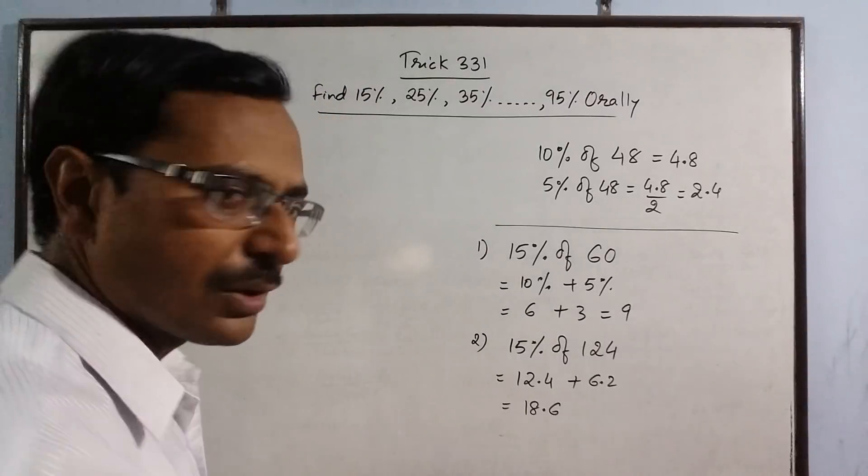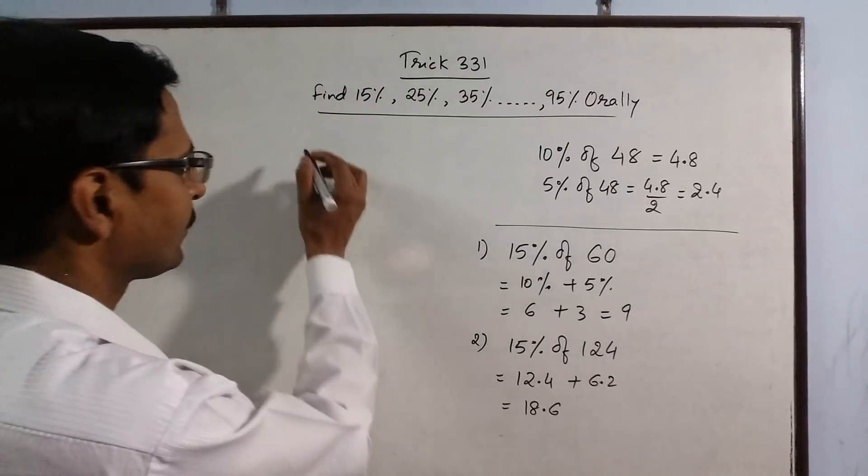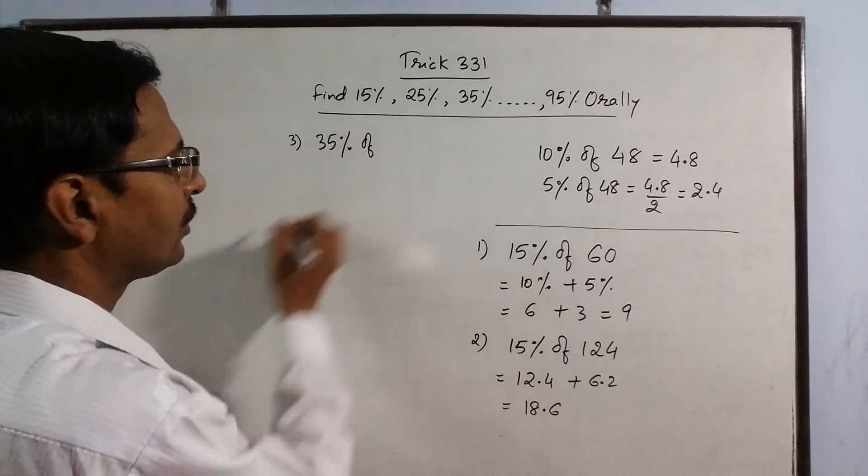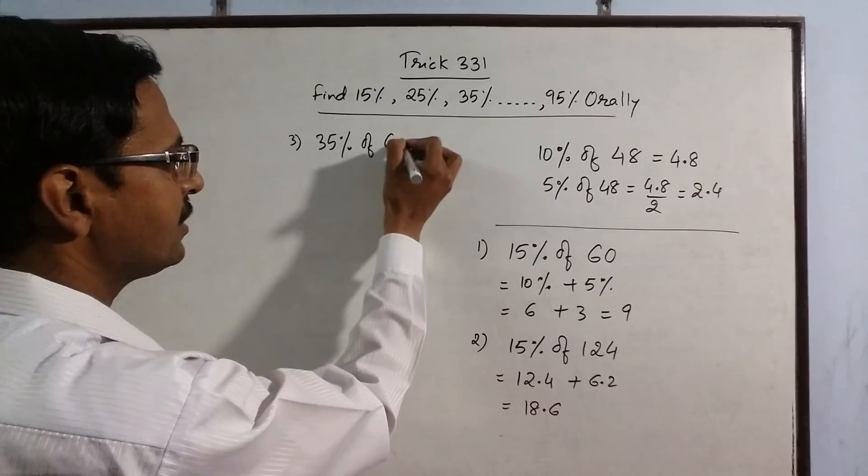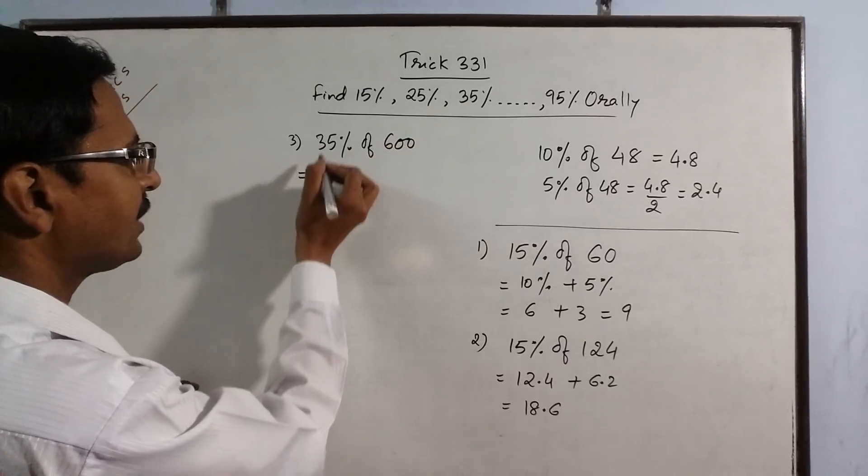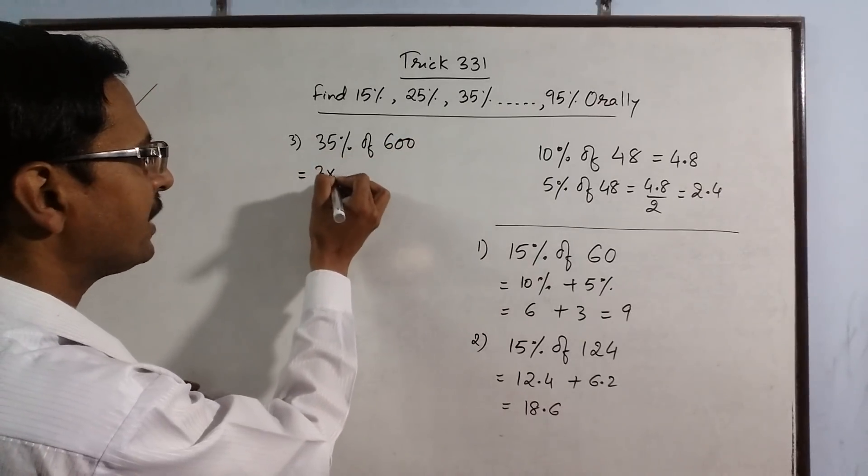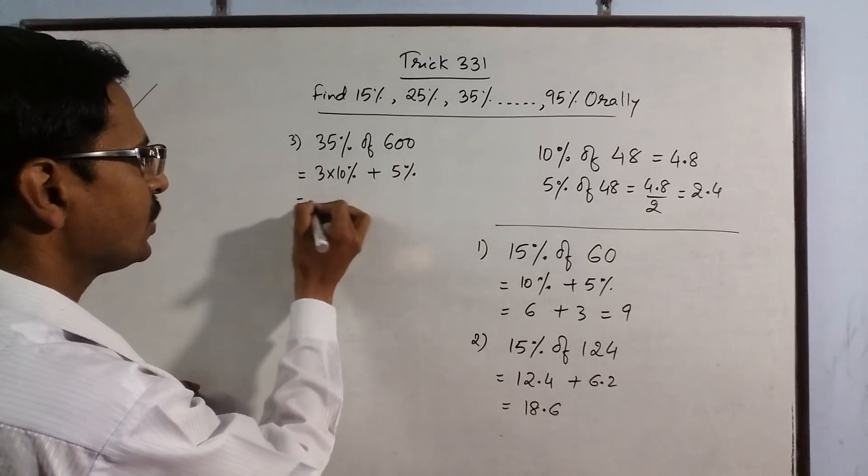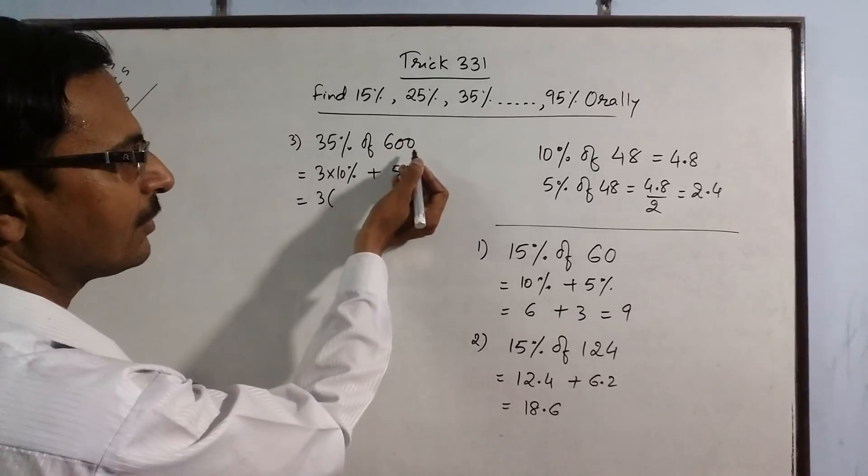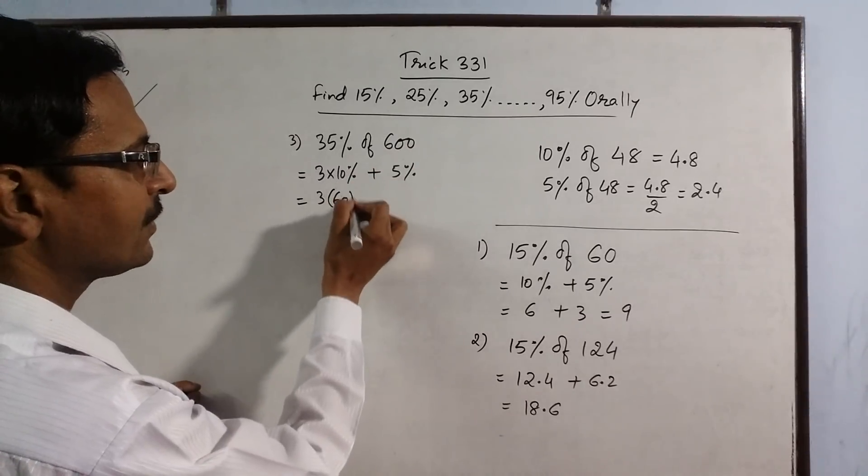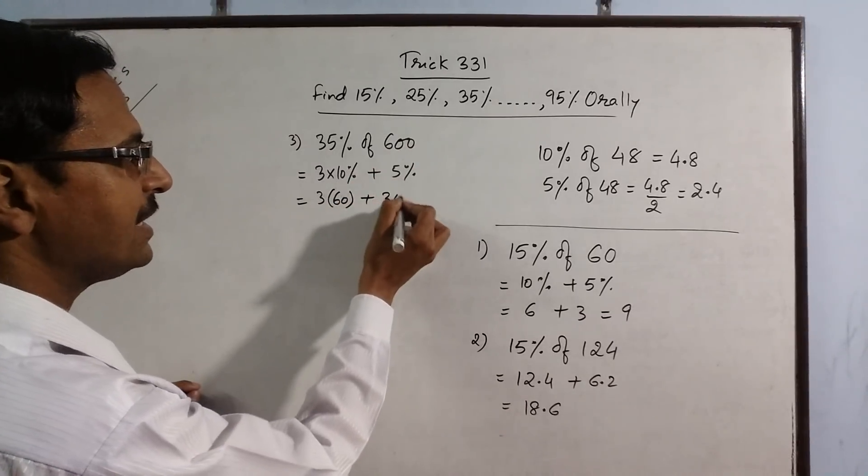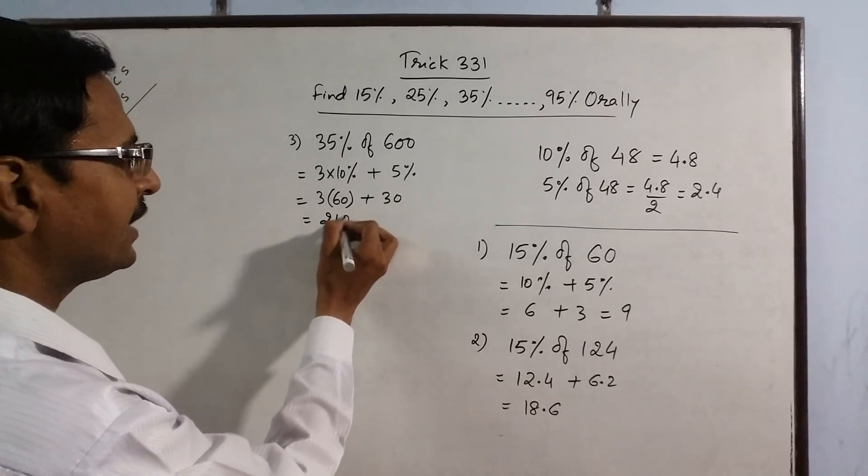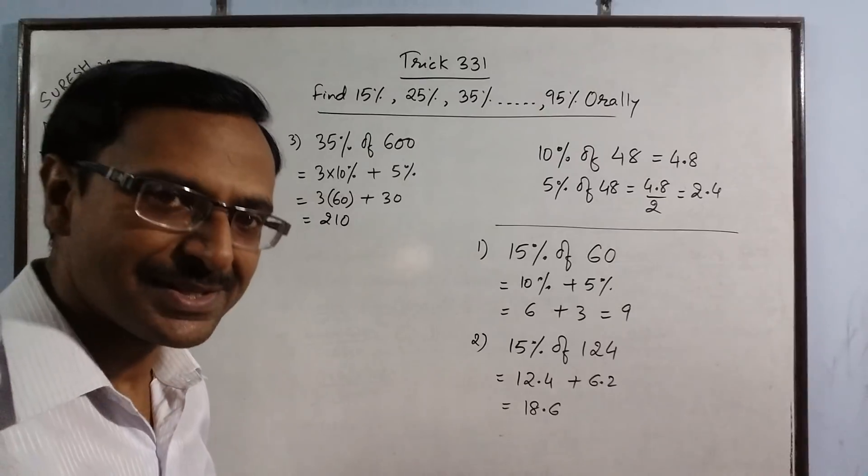Now let us take some more questions, little bit harder questions. Suppose we have 35% of 600. Now see 35% is basically 3 into 10%, this is 30% and 5%. So 3 into what is 10%? One digit from the right side, 60, and what is half of 60? It is 30. So 60 into 3 is 180 plus 30, 210 is 35% of 600.